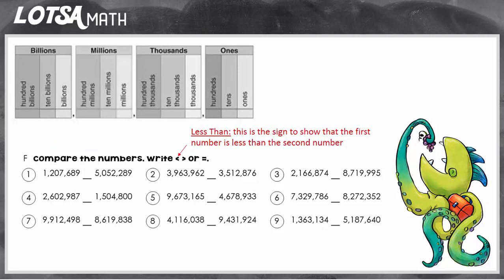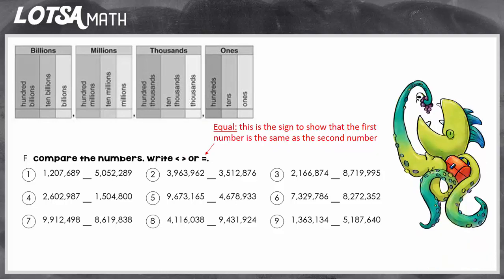And then you're going to use the symbols. This is the less than symbol. A symbol shows that the first number is less than the second number. The greater than sign shows that the first number is greater than the second number, and the equal sign shows that the first number and the second number are exactly the same.